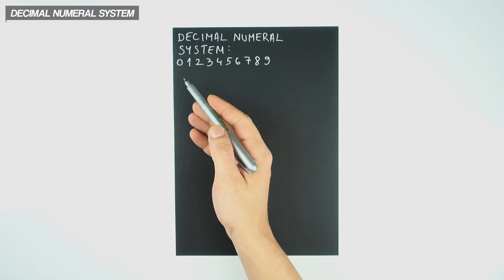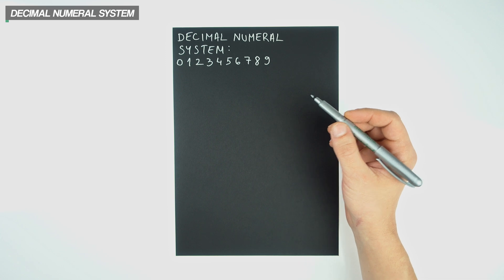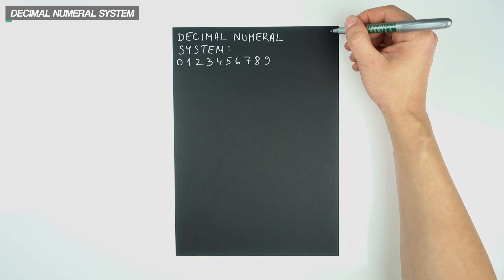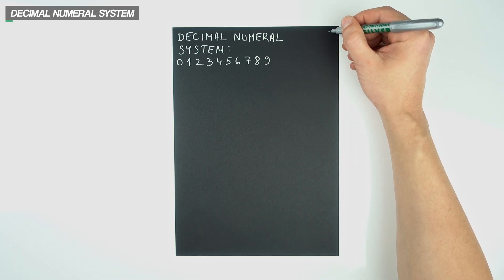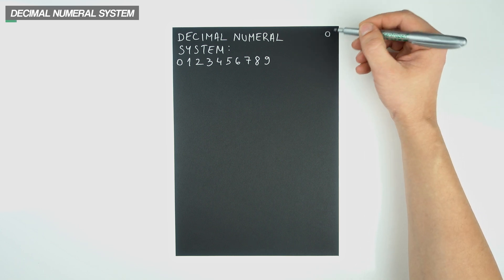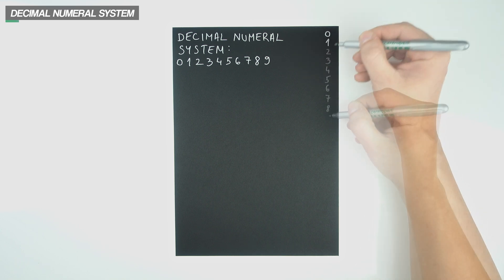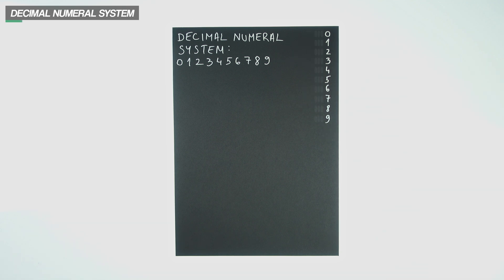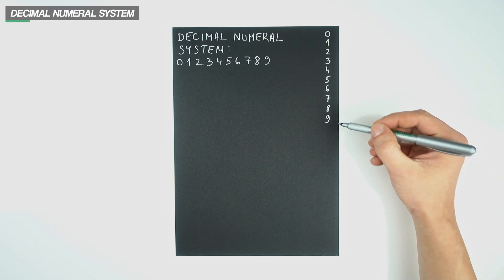These are the 10 digits that we use to represent any number in base 10. When we count, we start with a digit that represents the smallest value, which is 0, and we make our way to the one that represents the highest, which is 9. You can imagine these numbers as having an infinite amount of invisible zeros to their left, which will make things easier to grasp as we move on.